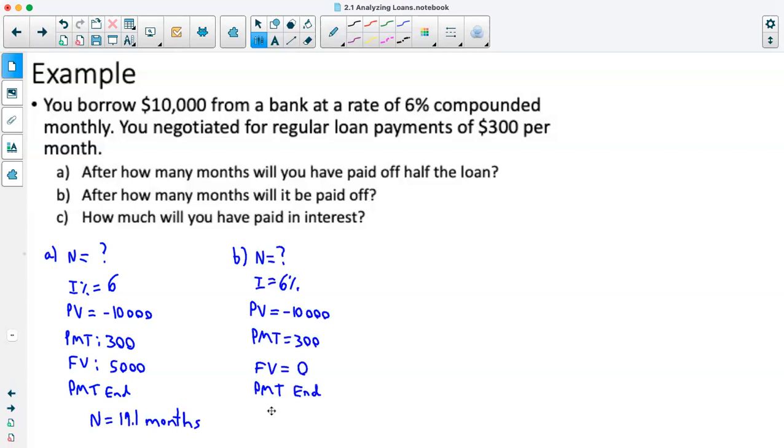And our payment will be at the end. We'll once again go into our apps, finance, select the fifth one down, which is our TVM N, and it's going to give us N is equal to 36.6. And once again, that's going to be in months, because our payments are every month. Now you'll notice that to pay the total, it's not going to be just double what it is to pay the first half.